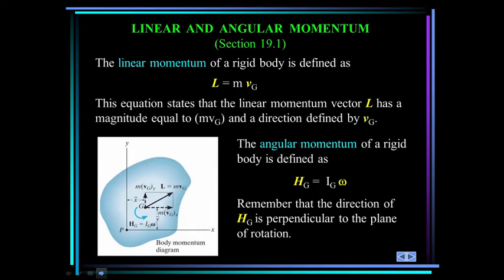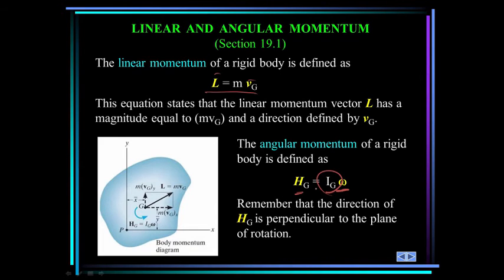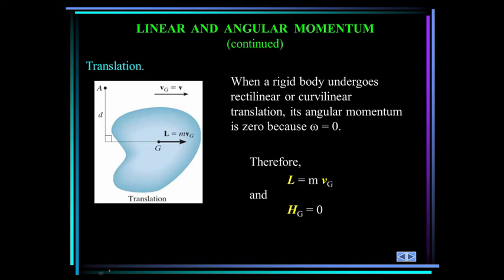Now moving to chapter 19 — linear and angular momentum. The linear momentum of a body is defined as its mass times the velocity of the mass center, and since velocity is a vector, linear momentum is also a vector. The angular momentum of a rigid body is defined as the mass moment of inertia about the mass center times its angular velocity omega, denoted by H. For pure translation, omega is zero, so there is no angular momentum; it equals zero.